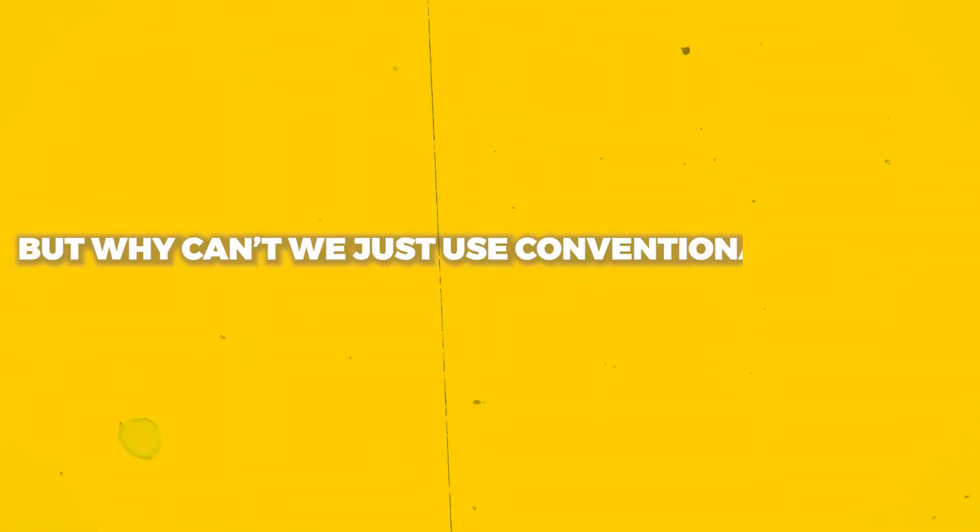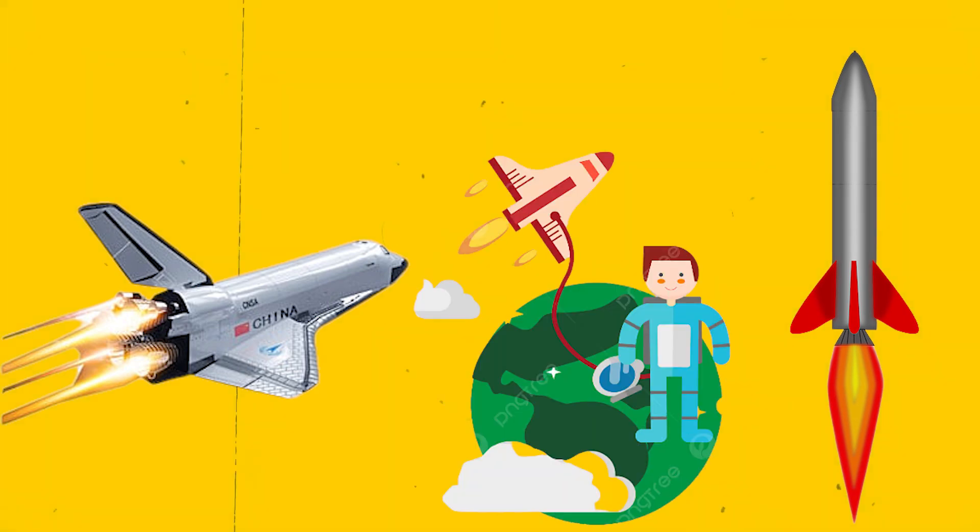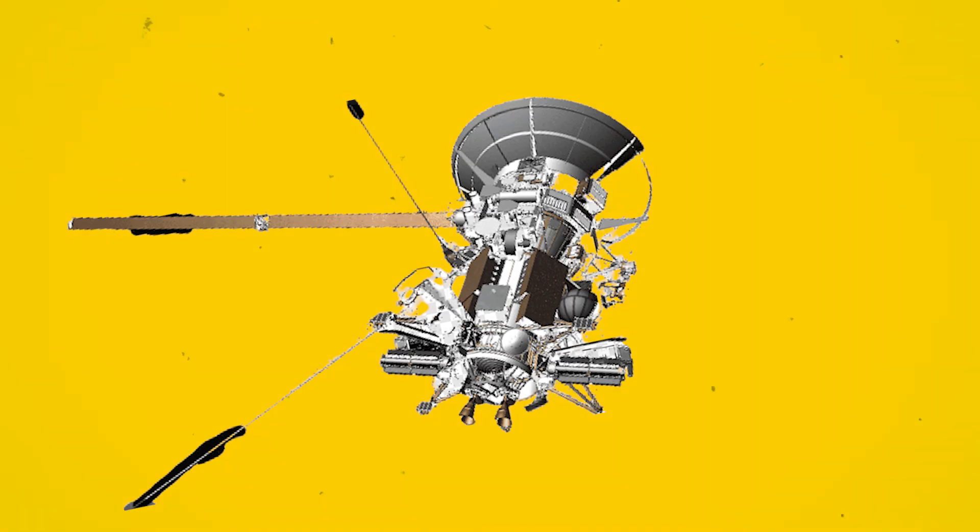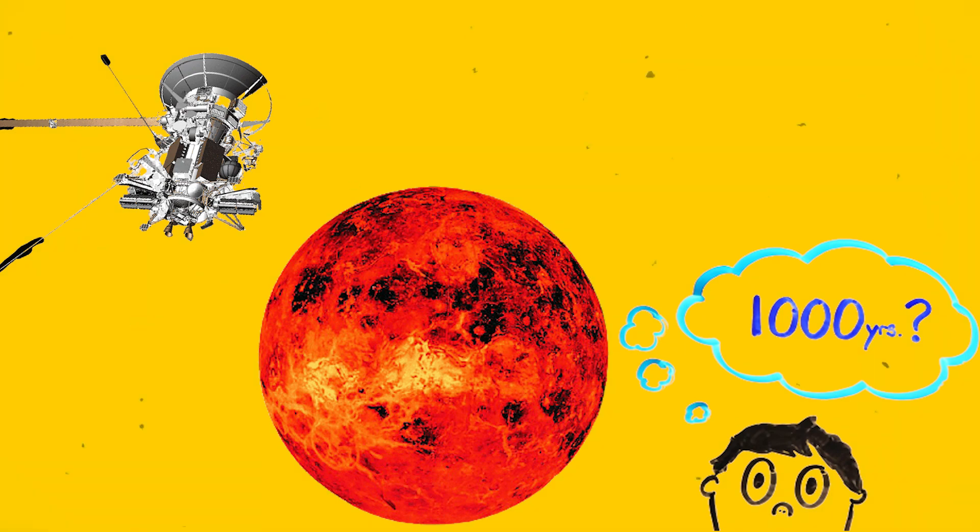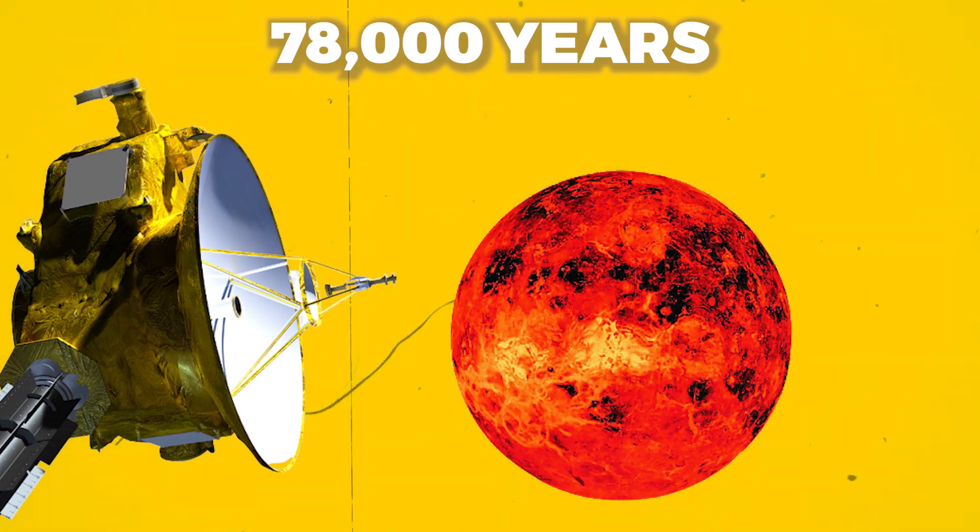But why can't we just use conventional rockets? All conventional spacecraft and rockets are extremely slow as compared to this cutting-edge technology. Voyager 1 and 2 would take thousands of years to arrive at Alpha Centauri. The New Horizons probe, in contrast, would take somewhere around 78,000 years to reach the Alpha Centauri system.